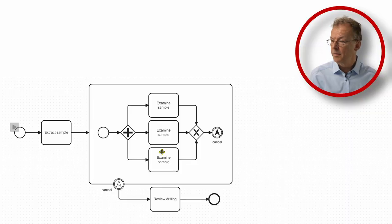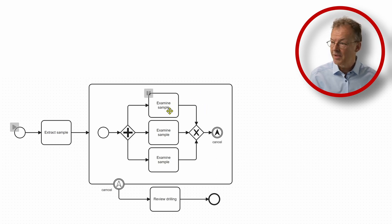Here we have the process model. We have extract sample and then there is a sub-process with the examine sample tasks in here. The first one of them that is finished will then trigger this signal, this cancel signal, which will lead to the abortion of this whole sub-process and then we go to review drilling.